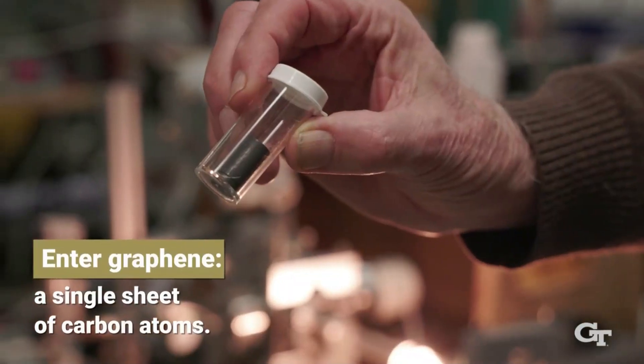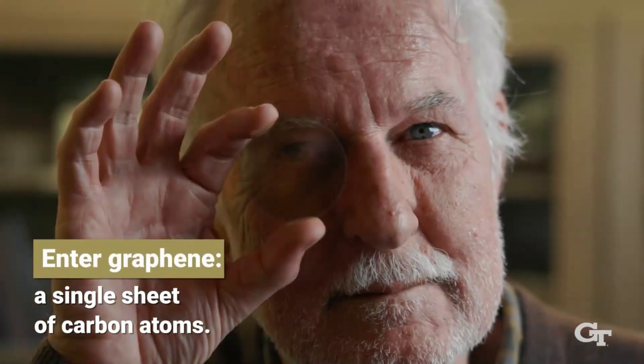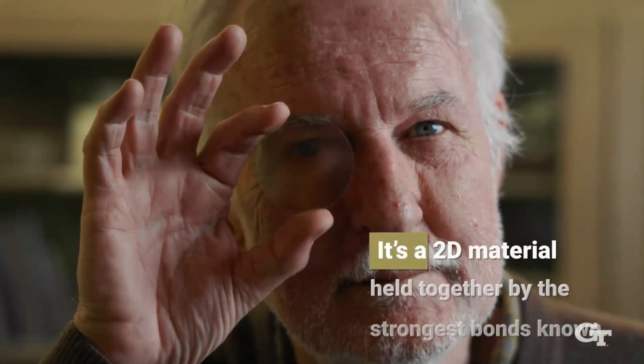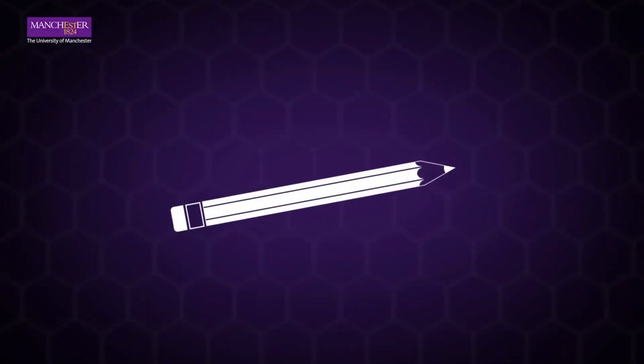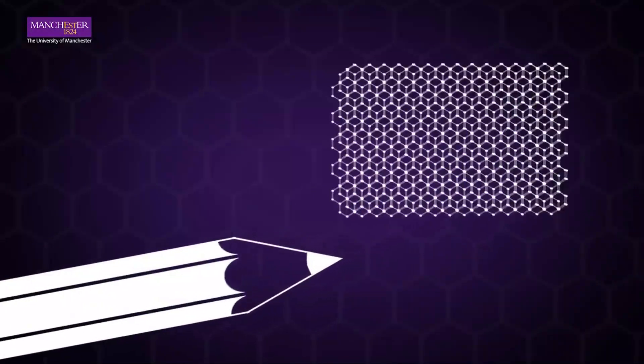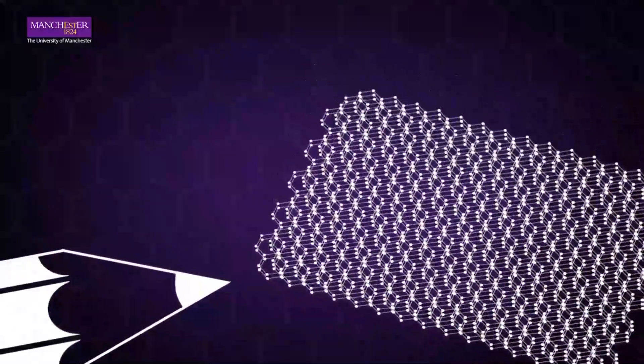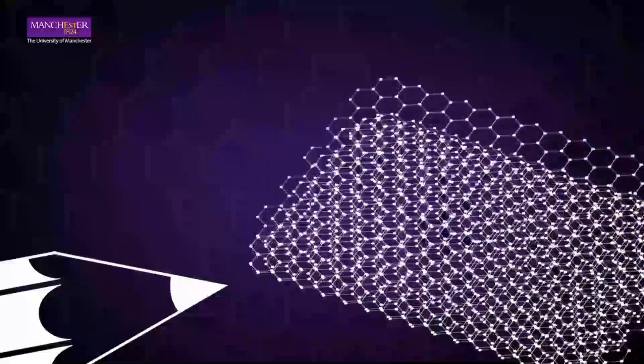One may ask how they managed to pull this off. Graphene is a semi-metal in its natural state, not a metal or a semiconductor. All transistors and silicon electronics function by applying an electric field to a substance with a band gap, which causes the material to turn on and off.